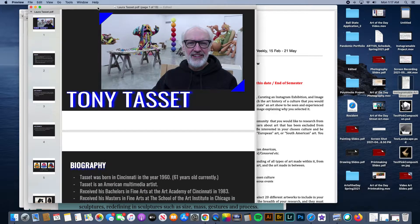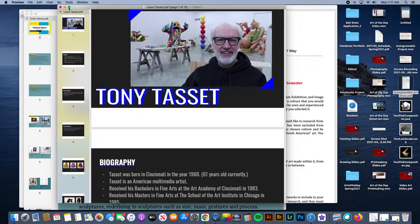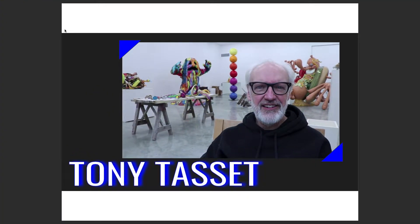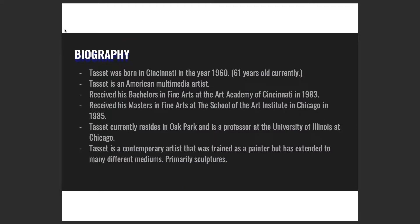Let's move on to the Art of the Day and sculpture. We're going to start with Laura's presentation on Tony Tacit. That is a picture of him in front of some crazy sculptures. Tacit was born in Cincinnati in 1960 — he's 61 years old. Tacit is an American multimedia artist. He received his Bachelor of Fine Arts at the Art Academy of Cincinnati in 1983 and his Master of Fine Arts at the School of the Art Institute of Chicago in 1985. He currently resides in Oak Park and is a professor at the University of Illinois at Chicago. He was trained as a painter but has extended to many different mediums, primarily sculpture.